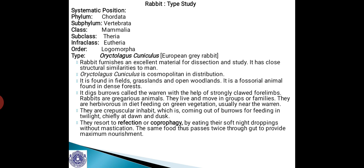Rabbits resort to refection or coprophagy, a very unique and interesting mechanism, by eating their soft night droppings without mastication. In the previous night they cast off their fecal matter, and the next day morning they consume the same. That phenomenon is called refection or coprophagy — they eat their own fecal matter. The same food thus passes twice through the gut to produce maximum nourishment, allowing them to extract all nutrients from the food they consume.